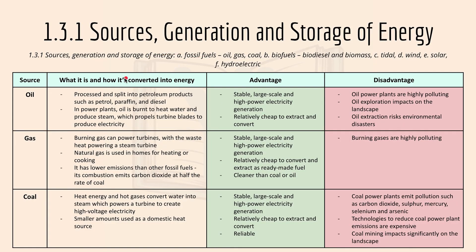We'll move on to 1.3.1 sources, generation and storage of energy, focusing on oil, gas and coal. Oil is processed and split into petroleum products such as petrol, paraffin and diesel. The advantage is that it's stable, large scale, and high power electricity generation, and it's relatively cheap to extract. The disadvantage is that oil power plants are highly polluting and they impact the landscape.